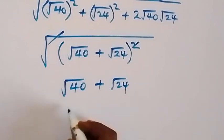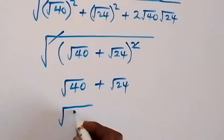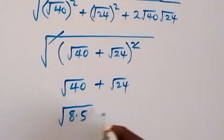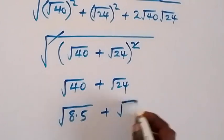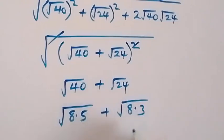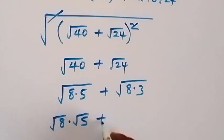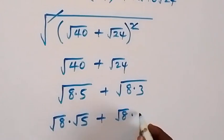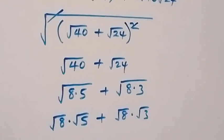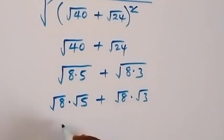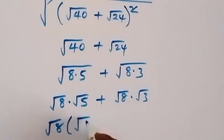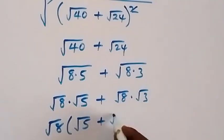We can equally simplify this further. Root 40 can be written as root 8 times 5, then plus root 24, which is root 8 times 3. We can separate this as root 8 times root 5, plus root 8 times root 3. When we factor root 8 out, we have root 8 times (root 5 plus root 3).